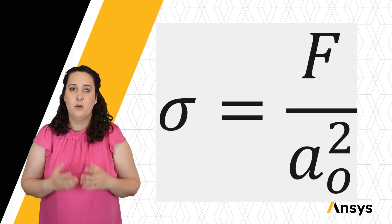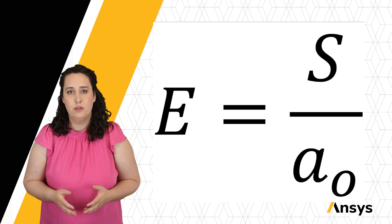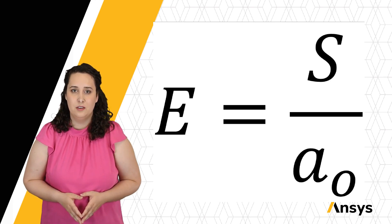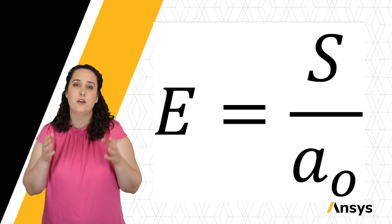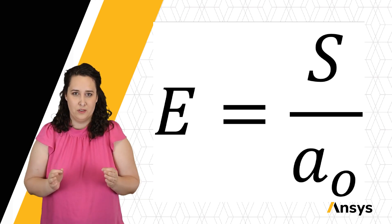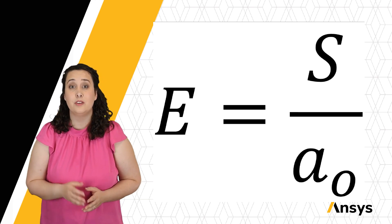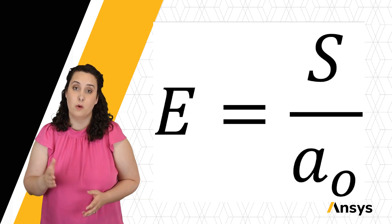Combine this all together, and we get that our Young's modulus is roughly proportional to my bond stiffness S over A0. Now, this occurs when I'm applying small forces and I'm staying within a region of my force-displacement curve where there is a linear relationship between force and displacement.